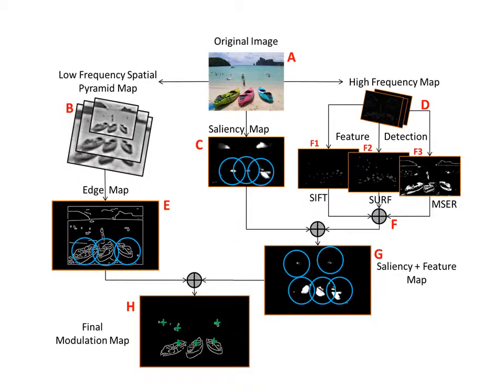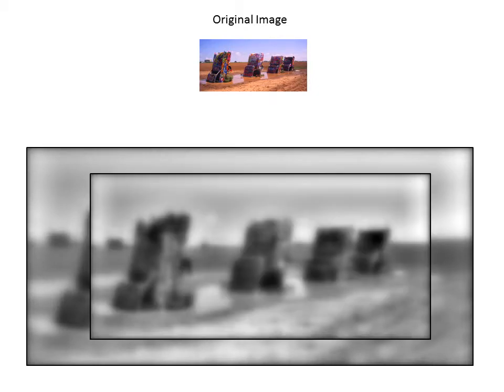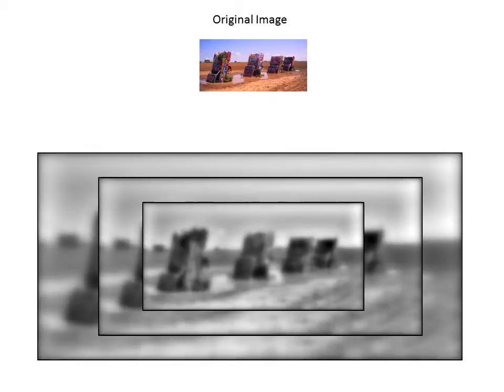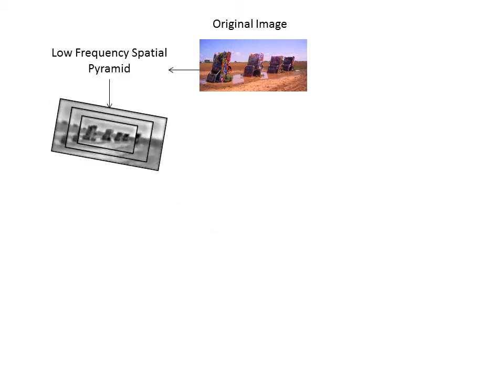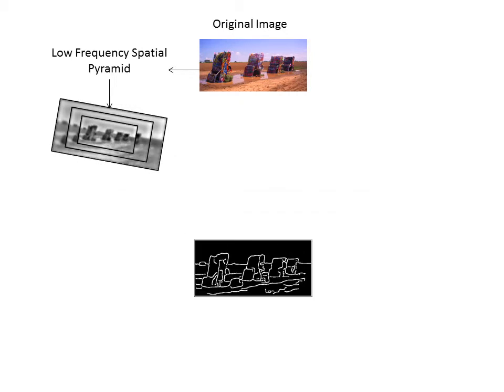In this work, we present a novel gaze guidance framework that automatically predicts the region of interest to guide viewers' attention. The first stage in the framework is to extract the edge map from the original image. The edge map is used to determine the shape of the object. A dyadic low spatial frequency pyramid is constructed at 4 cycles per image from the original scene, and the overall edge map is constructed from the pyramid images.